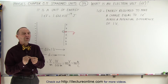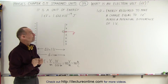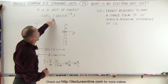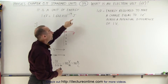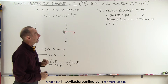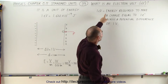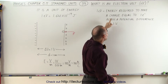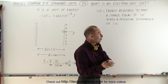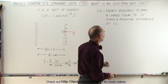The reason why is because an electron volt is a very small unit of energy. An electron volt is equal to 1.602 times 10 to the minus 19 joules, so it's very, very tiny. An electron volt can be defined as the energy required to move a charge equal to 1 electron — like a proton or an electron — across a potential difference of 1 volt.